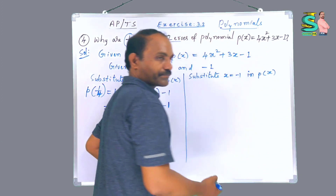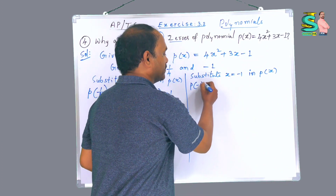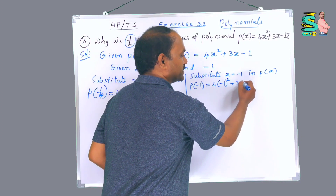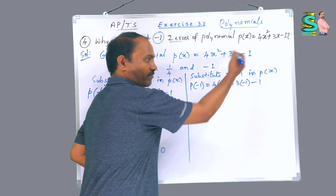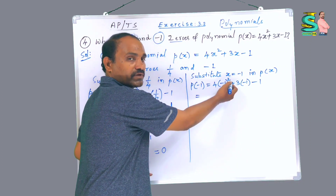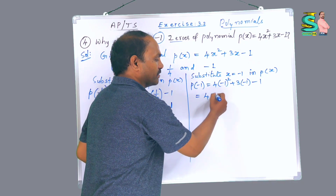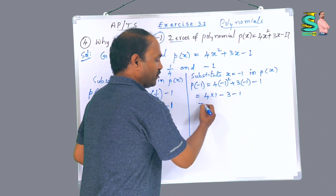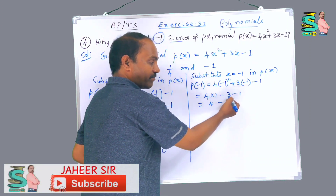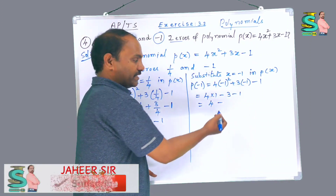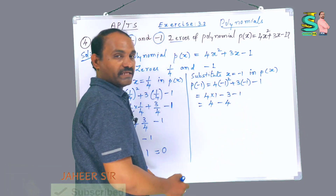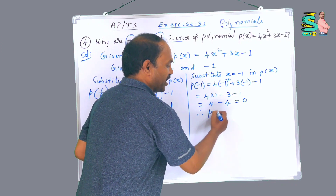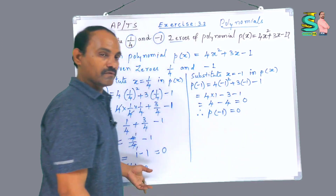Now we substitute x = -1 in p(x). So p(-1) = 4 into (-1)² + 3 into (-1) minus 1. Here 4 into (-1)² equals 4 into 1 = 4, plus (+) times (-) gives -3, minus 1. Now -3 and -1 have the same sign, so we add: -3 - 1 = -4. Therefore 4 - 4 = 0. So p(-1) is also equal to 0.